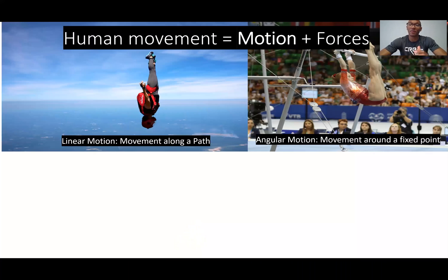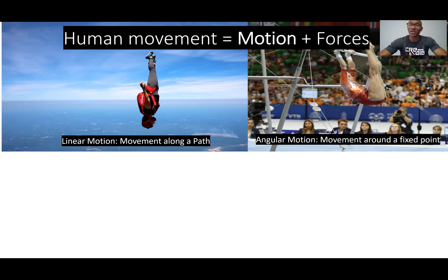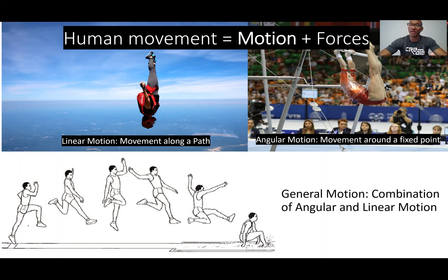Human movement is comprised of motion and forces. Motion can either be linear, which is movement along a particular path, or angular, which is movement around a fixed point. However, when we move, it's often a combination of both linear and angular motion.